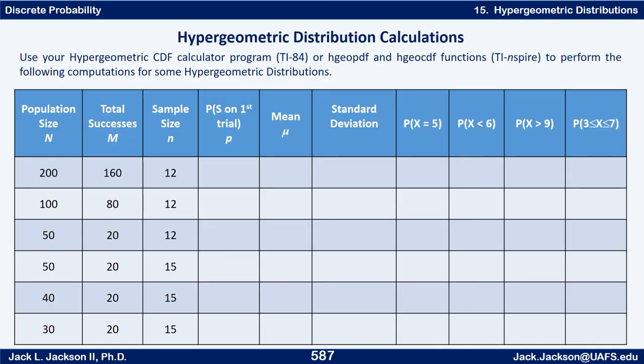Here are a series of problems with hypergeometric distributions. Remember, you need to know the population size which we call capital N. We have the total number of successes in the population, M. Of course that has to be less than or equal to N. You have the sample size which is lowercase n.